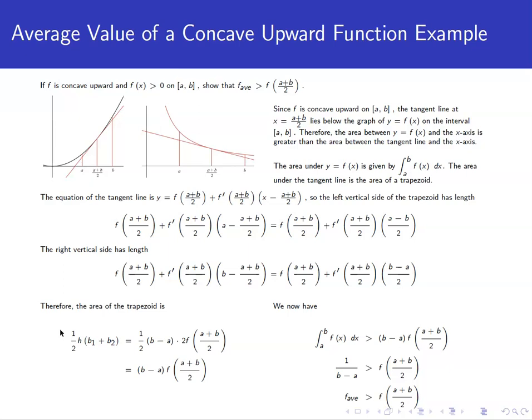So we're assuming that the function is concave up, and let's just for argument's sake make sure that the function is also positive on the interval from A to B. We're going to show that the average value of this function is actually greater than the function evaluated at the average of the endpoints.